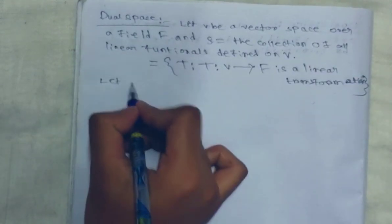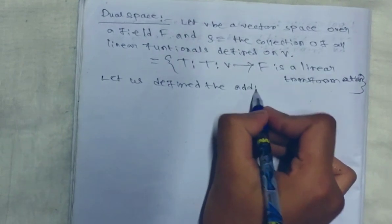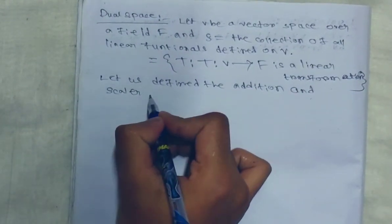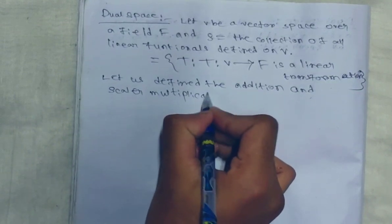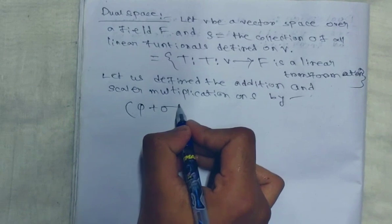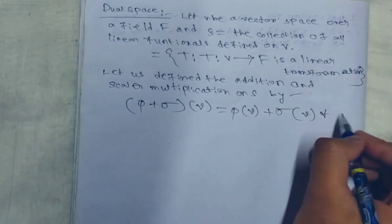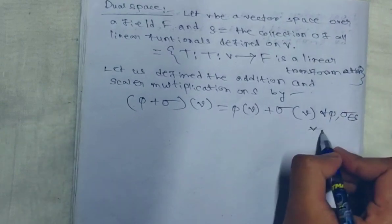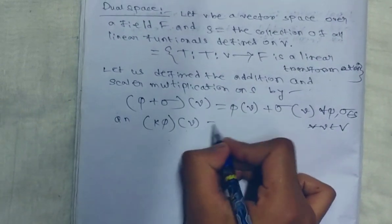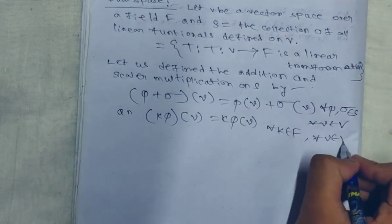Now let us define the addition and scalar multiplication on S by: (φ + σ)(v) = φ(v) + σ(v), for all φ, σ belonging to S and for all v belonging to vector space V. And (kφ)(v) = k · φ(v), for all k belonging to the field and for all v belonging to V.